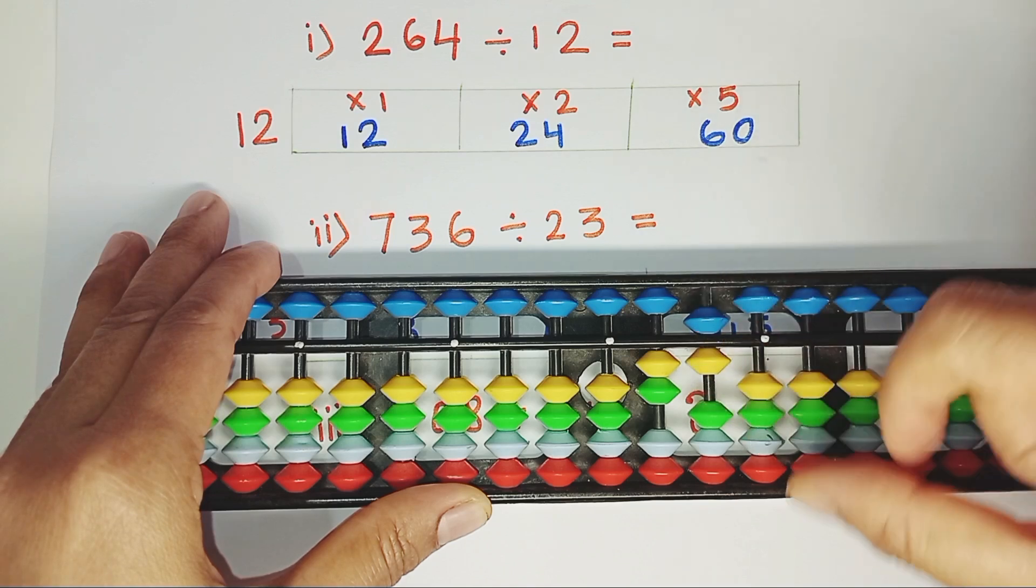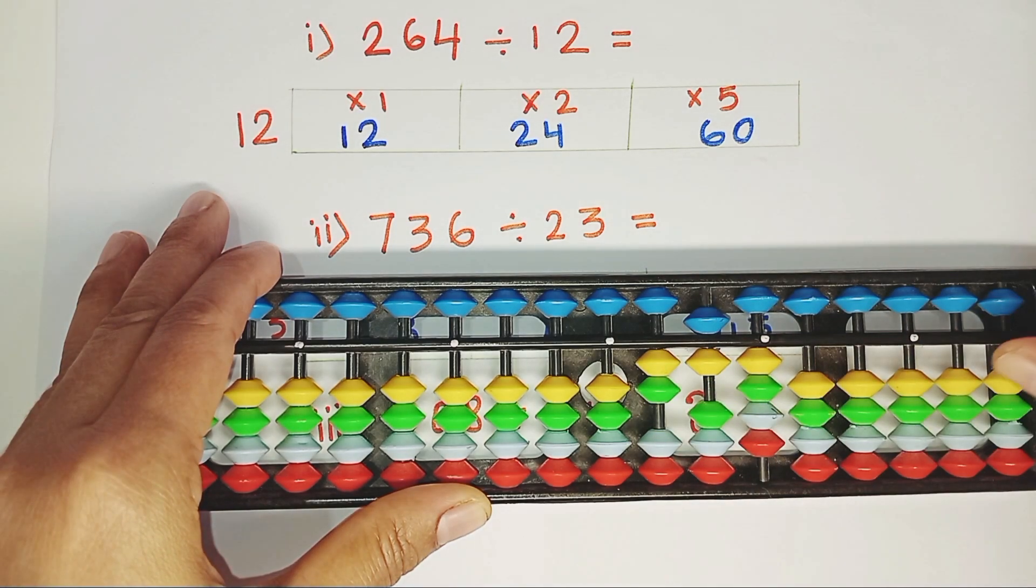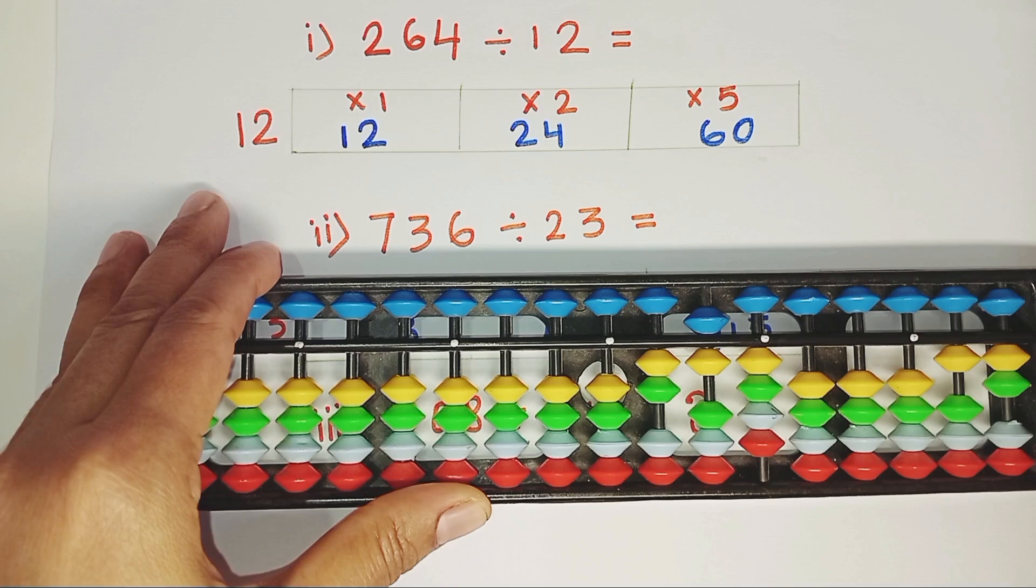2, 6 and 4. 264 divided by 12. 1, 2. Always place the divisor at the end of the Abacus. That will help you to remember. But that is not a compulsory step. After practicing some more division, you can skip this step.